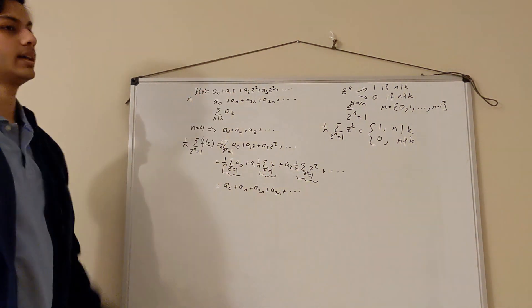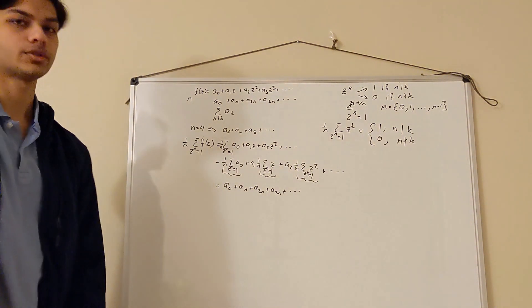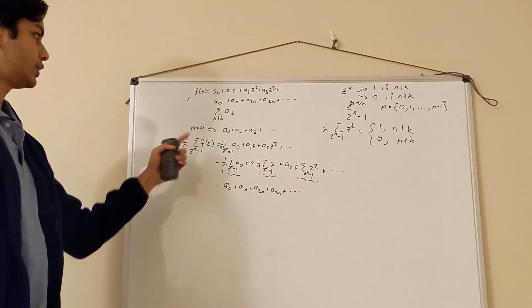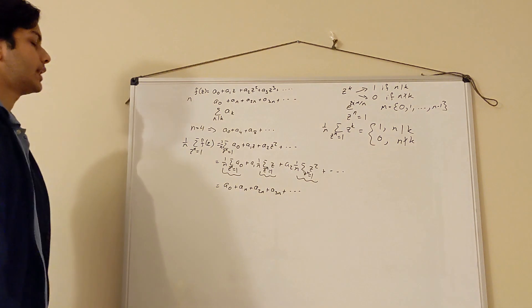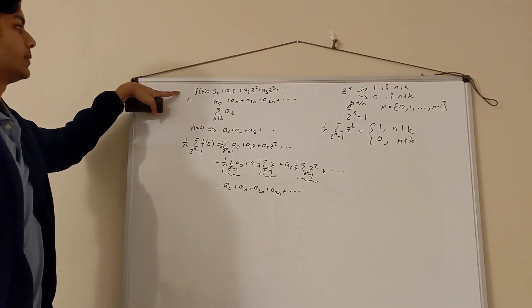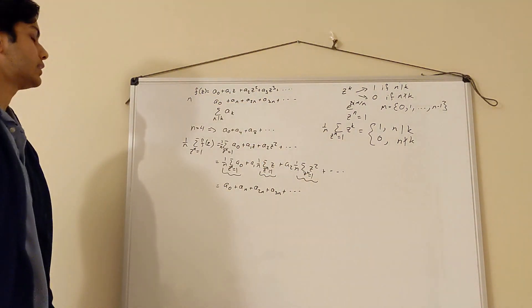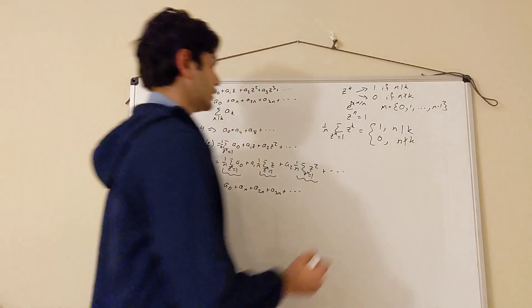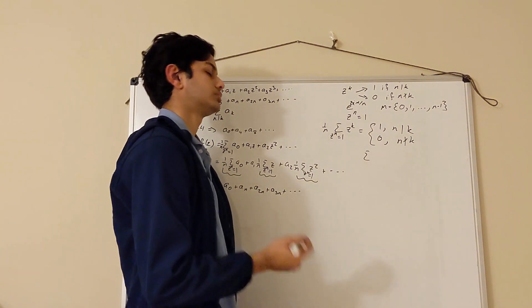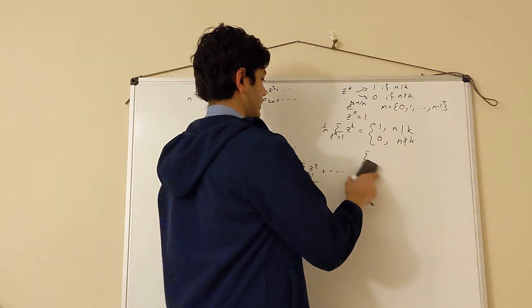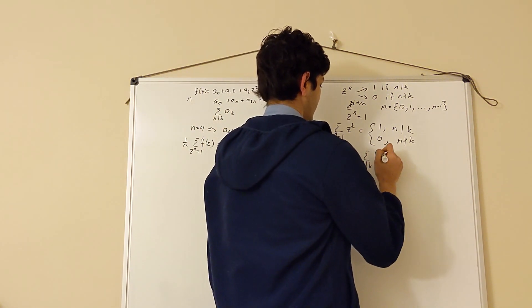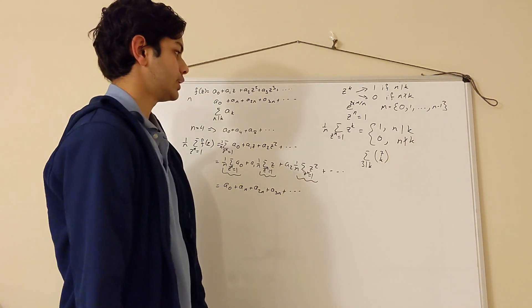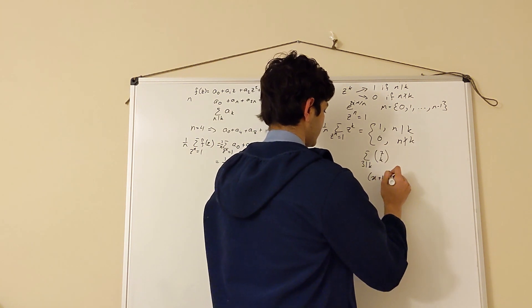The way to use this is: say you have some function and want to isolate every nth term — useful in probability, for example, to calculate the probability that something happens after n, 2n, or 3n tries. Or say you have some interesting sum: you construct a function f such that every nth coefficient is a term in your series, then use this technique to evaluate the sum. For example, try computing ∑_{3|k} C(7,k) = C(7,0) + C(7,3) + C(7,6), by looking at the function (x + 1)^7.